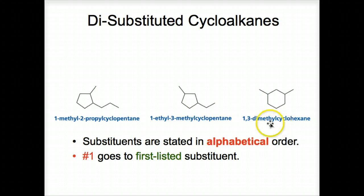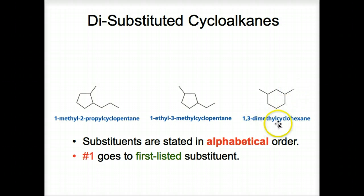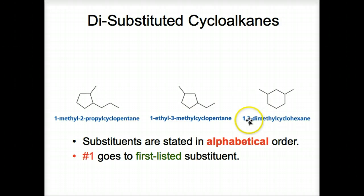Here's another example. There are two methyl groups off of this cyclohexane — a methyl group and a methyl group, so we have dimethyl. One of these is number one, then counting to the other gives three. If this is one, then the other is three — there's really no difference. So we call it 1,3-dimethylcyclohexane.